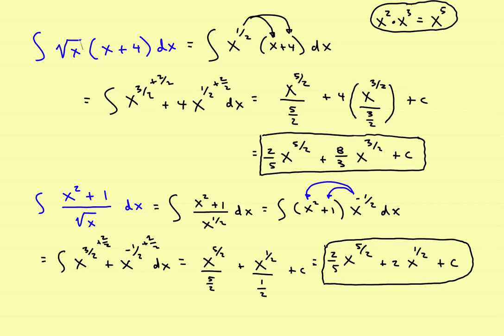Remember: change the radical from radical form into fractional form, then distribute, then apply your rule. In both of these cases, the rewrite step — rewriting it before you apply the rule — is the key phase. Rewrite it, then apply the rule, and you've got it.